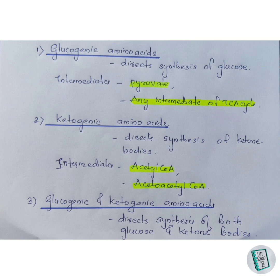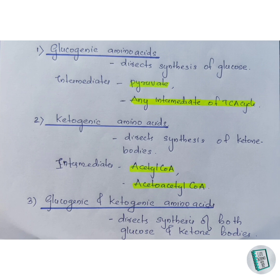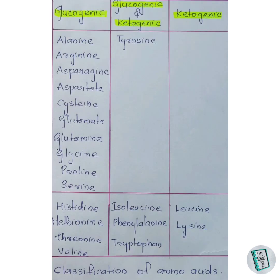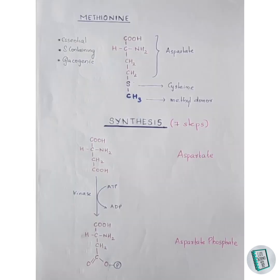Now let us look at ketogenic amino acids. When acetyl-CoA or acetoacetyl-CoA are formed as intermediates during amino acid catabolism, they can give rise to ketone bodies. Those amino acids whose catabolism leads to formation of acetyl-CoA or acetoacetyl-CoA, which in turn give rise to ketone bodies, are termed as ketogenic amino acids. Some amino acids can be both ketogenic and glucogenic. This table shows the classification of amino acids based on glucogenic and ketogenic nature.